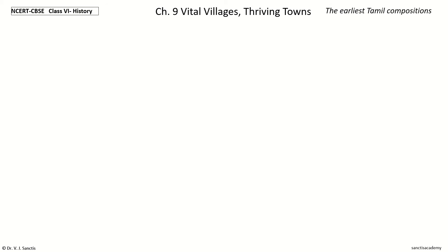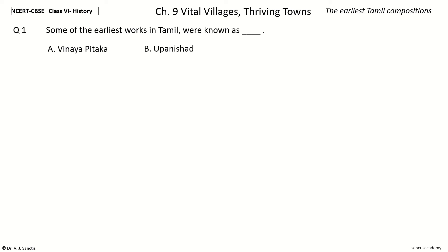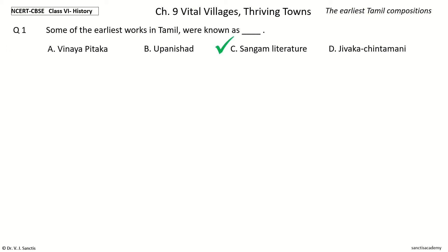Question 1. Some of the earliest works in Tamil were known as blank. The options are: Vinaya Pitaka, Upanishad, Sangam Literature, Jivaka Chintamani. The answer is Sangam Literature. Some of the earliest works in Tamil were known as Sangam Literature.